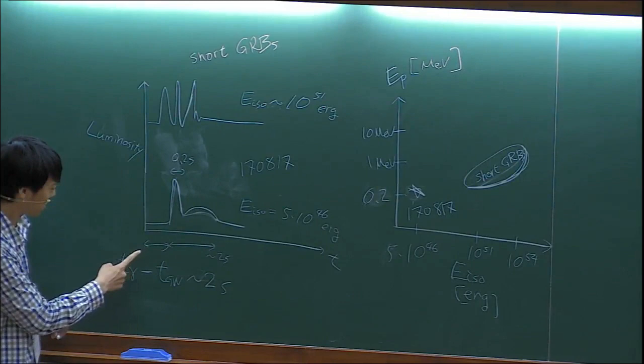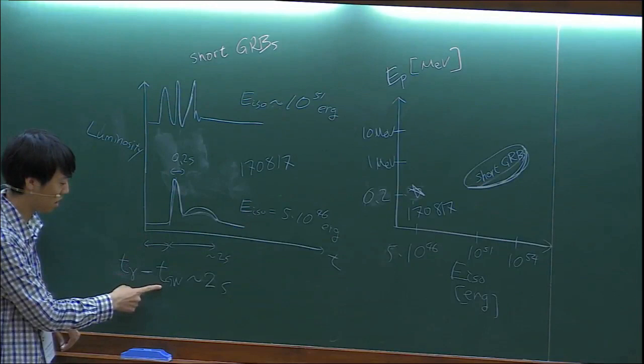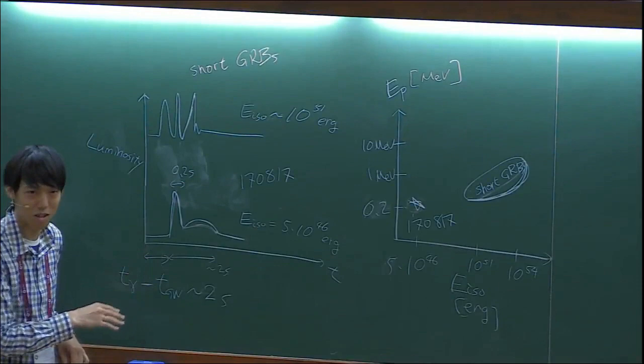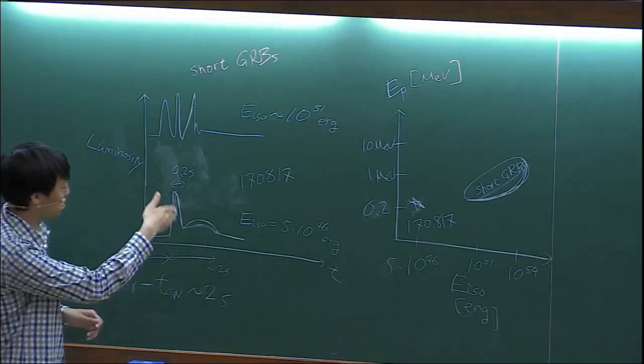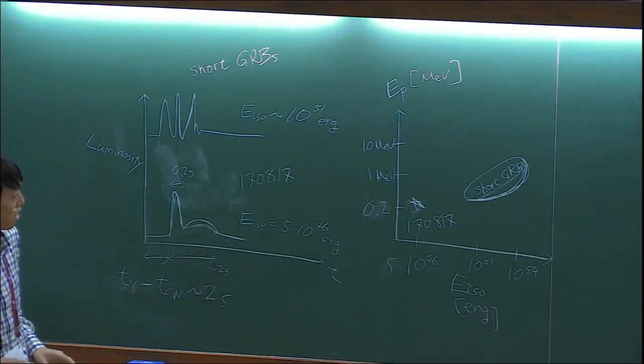One interesting fact I didn't mention yesterday: there is a delay between the gravitational wave arrival time and the GRB arrival time - it was about two seconds. And the duration is also about two seconds. The initial pulse was about 0.2 seconds, and then we have a soft tail.